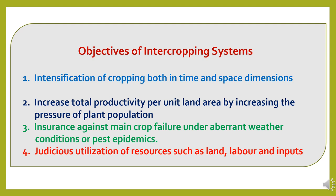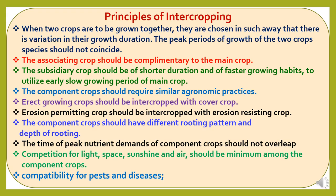Now, the objectives of intercropping systems: First, intensification of cropping both in time and space dimensions by growing two or more crops. Second, increase total productivity per unit land area by increasing the pressure of plant population. Third, insurance against main crop failure under aberrant weather conditions or pest epidemics. Fourth, judicious utilization of resources such as land, labor, and inputs.